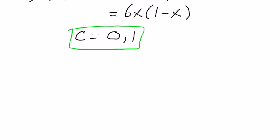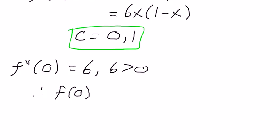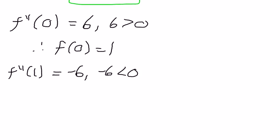So taking the critical point and plugging us back into our double derivative, f double prime of 0 is going to give 6, and 6 is greater than zero. Therefore f of 0 equals 1. F double prime of 1 is equal to negative 6. Negative 6 is less than zero, so f of 1 equals 2.